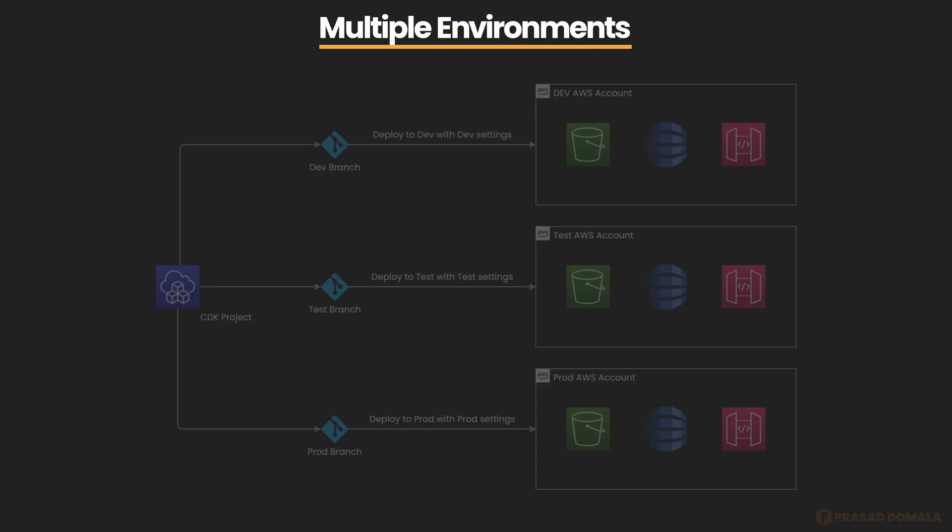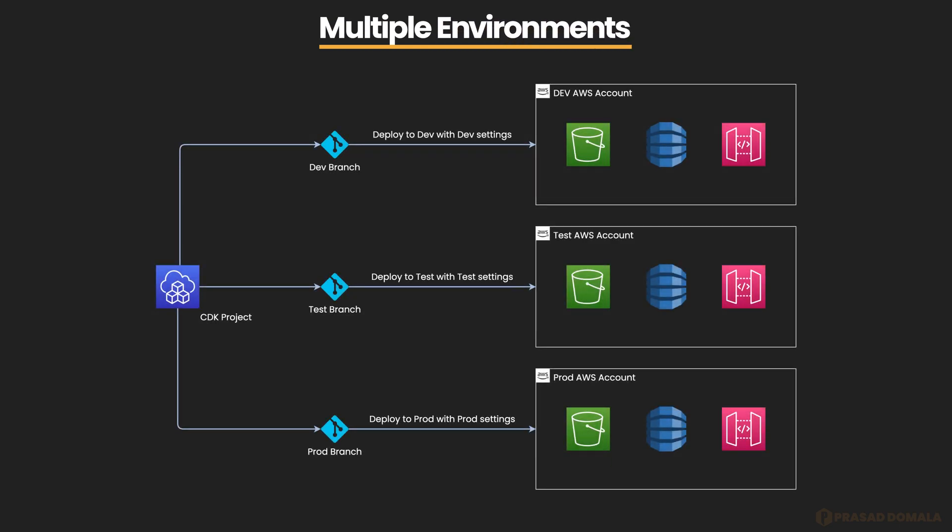It's a common scenario to have multiple environments in any infrastructure project like dev, test, and production. The goal here is to deploy our infrastructure to these environments using a single code base, but still allowing customization per environment. For example, if you are creating an S3 bucket, you might not want encryption enabled in dev, but in production you need to enable encryption. We should be able to manage such environment-specific customizations from a central location within our project.